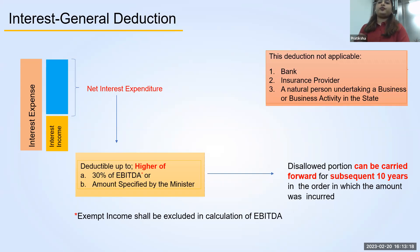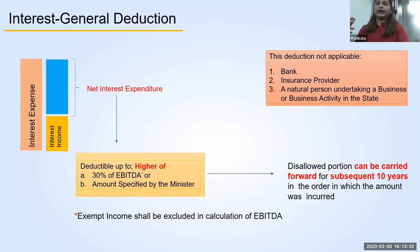For the calculation of EBITDA, exempt income shall not be taken into consideration. This provision which we discussed is not applicable to a banking company, insurance company, and a natural person who is undertaking business activity.